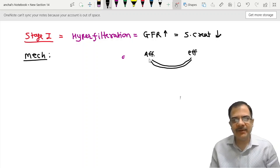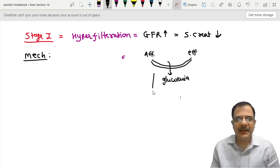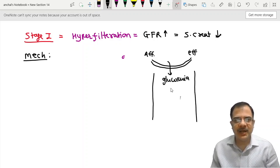We know that if afferent arteriole vasodilates, more GFR will be there. More blood will enter the glomerulus and more GFR will be there due to afferent arteriole dilation. So what happens? There is glucosuria here, and this glucose comes in the urine tubules, the renal tubules.